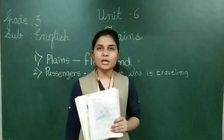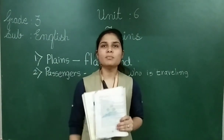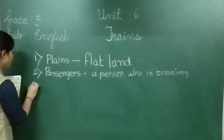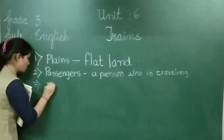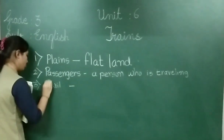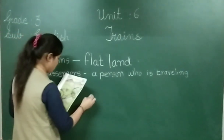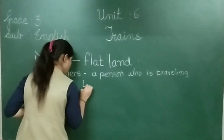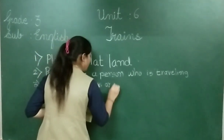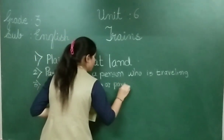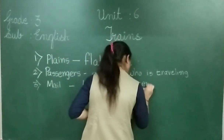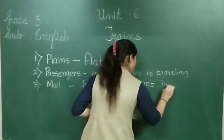Carrying mail. Carrying mail means the train also carries mail. Mail means letters or parcels — things sent by post. If you want to send something via courier, the train is used to transport it.